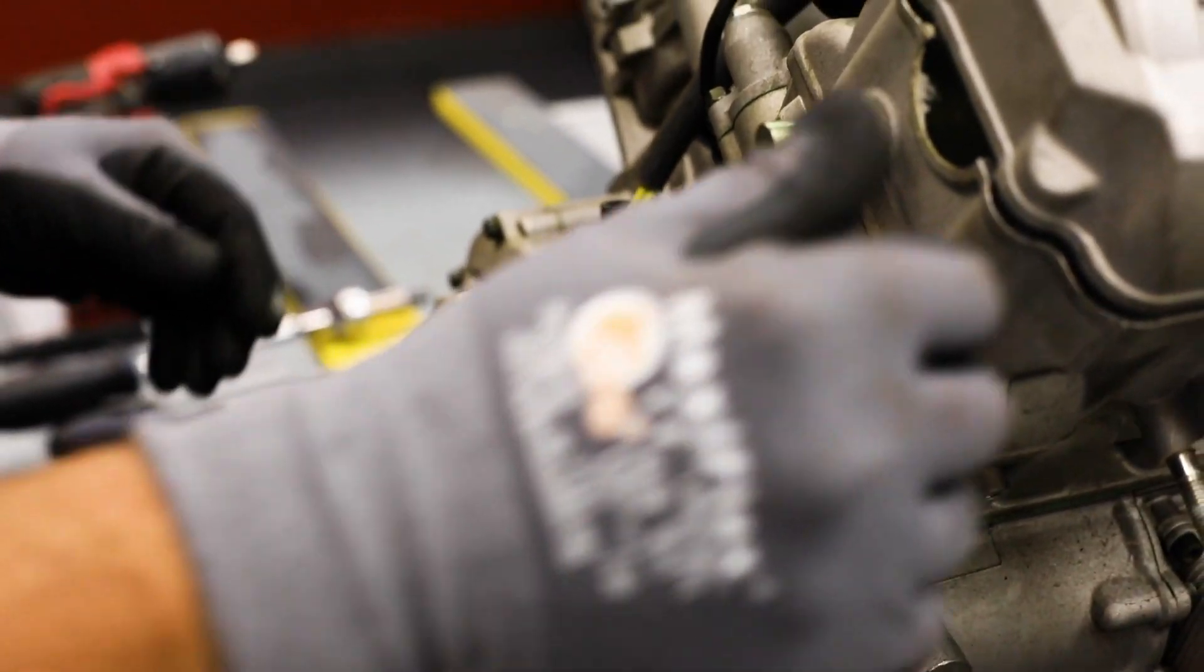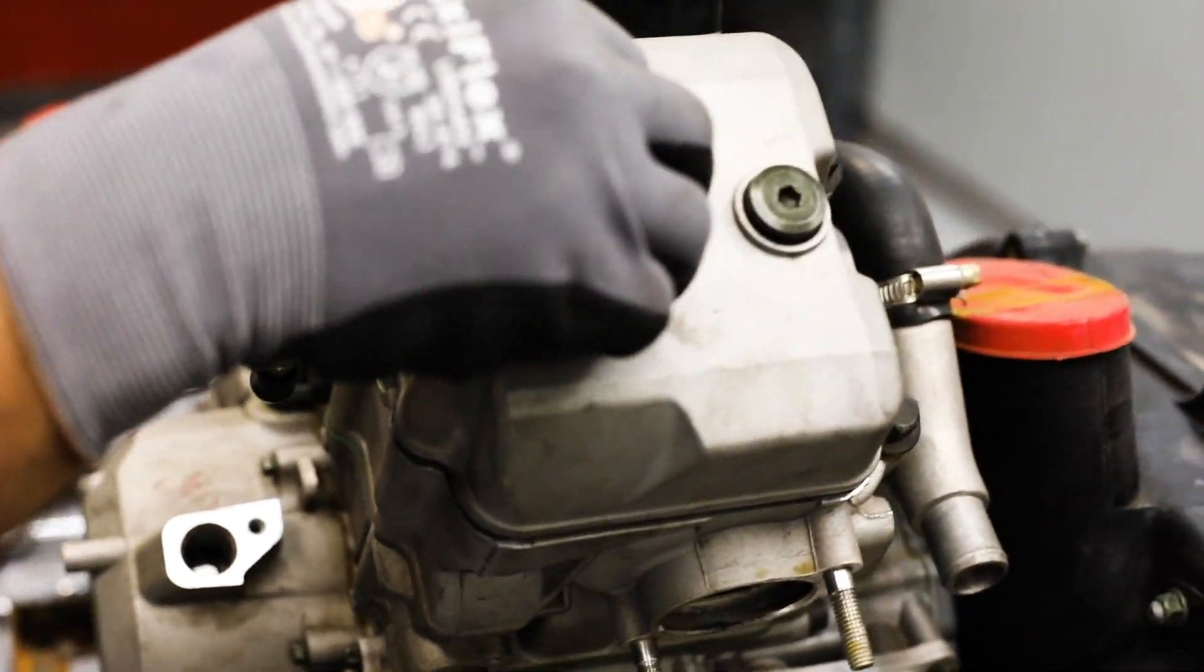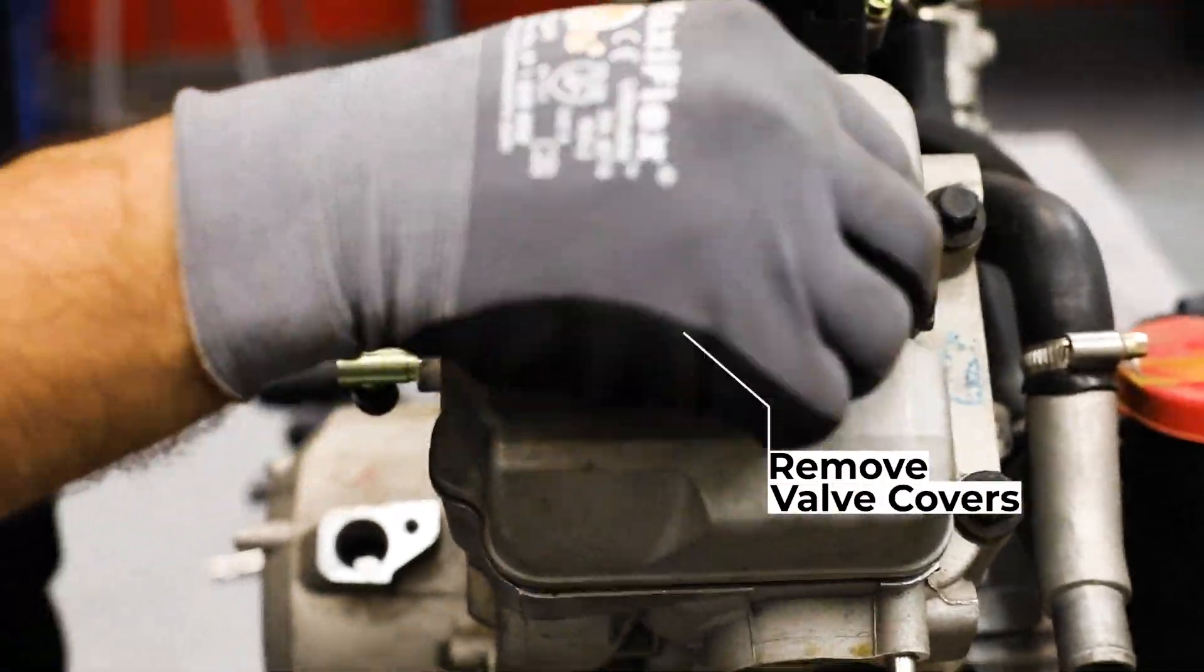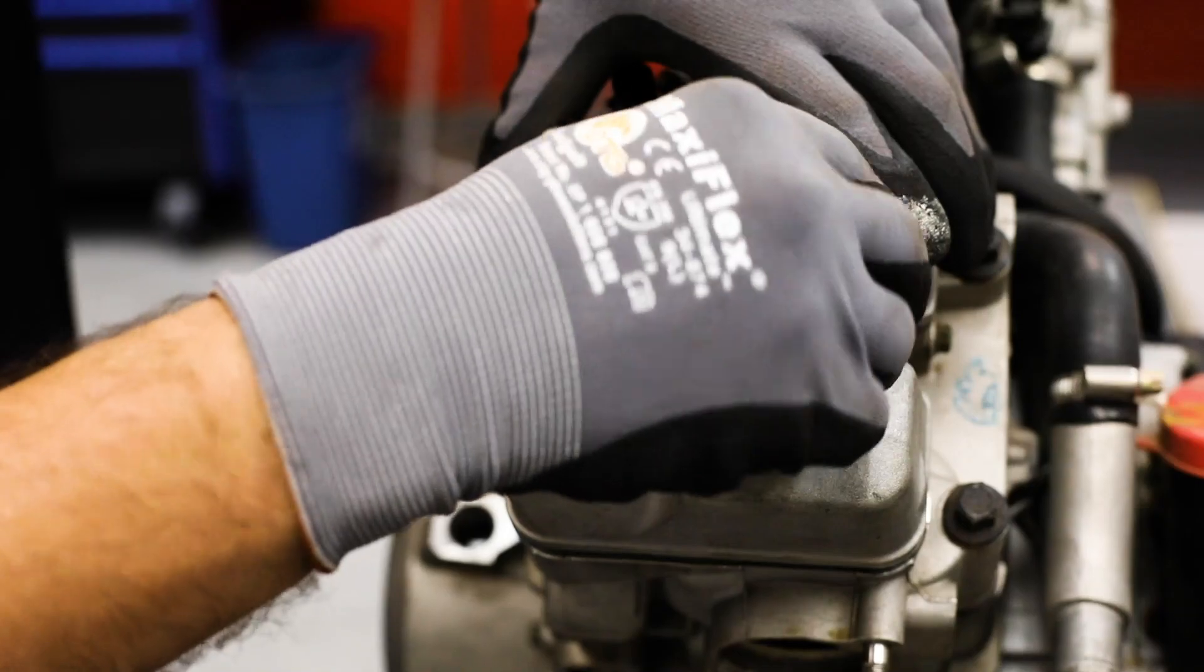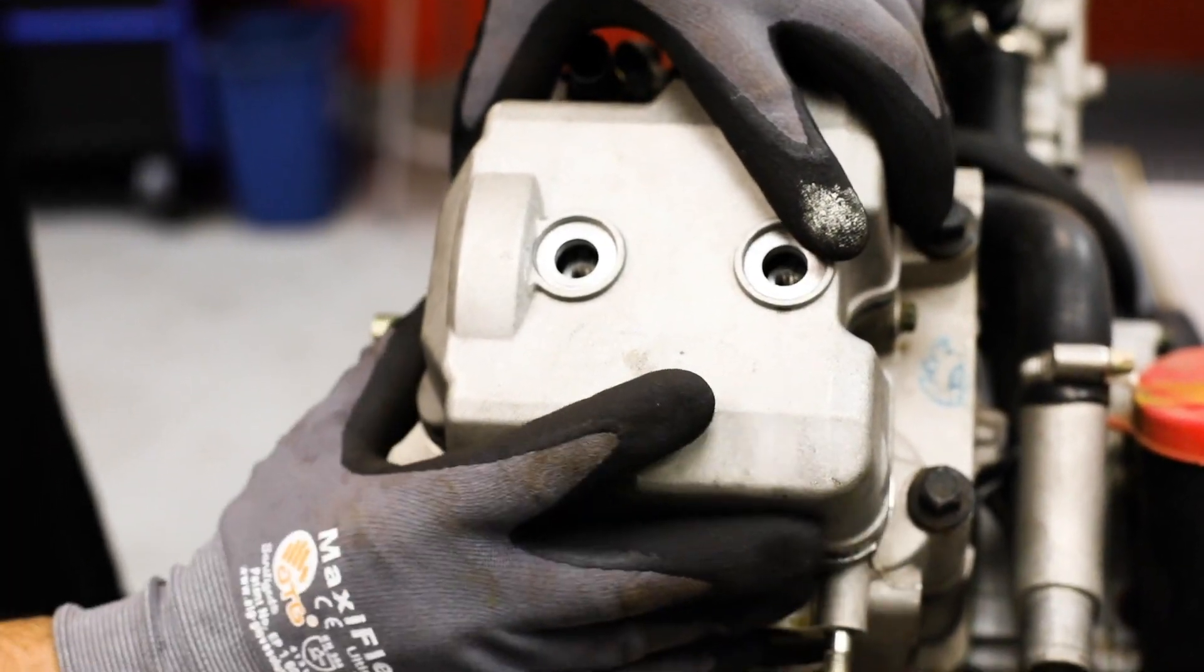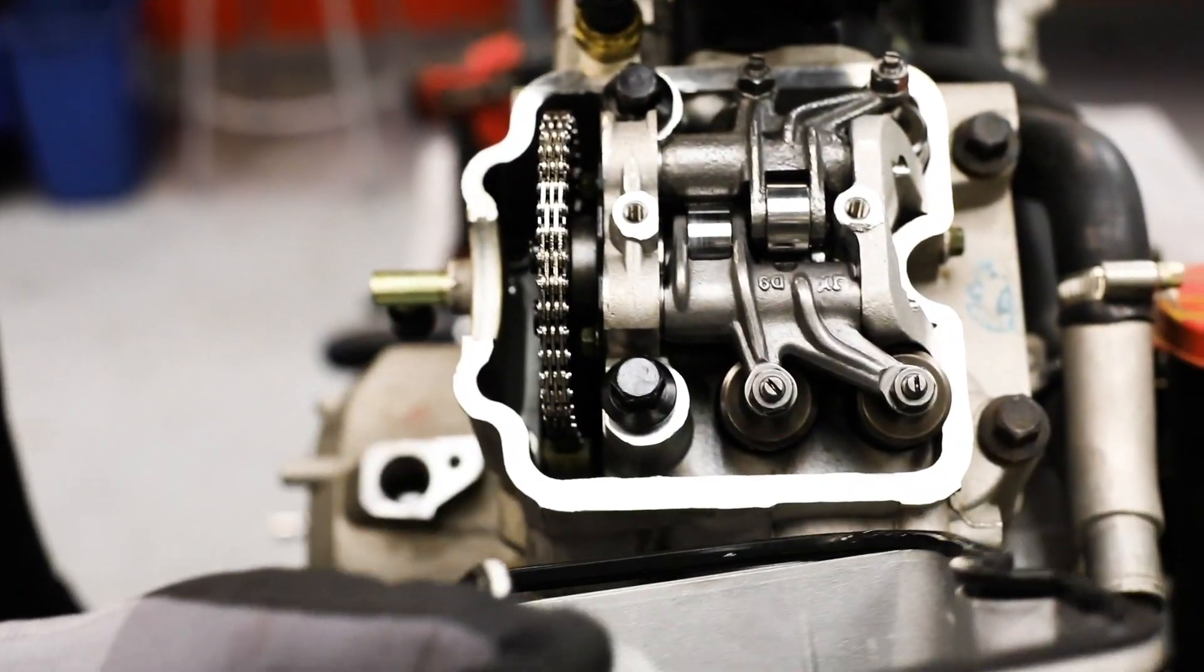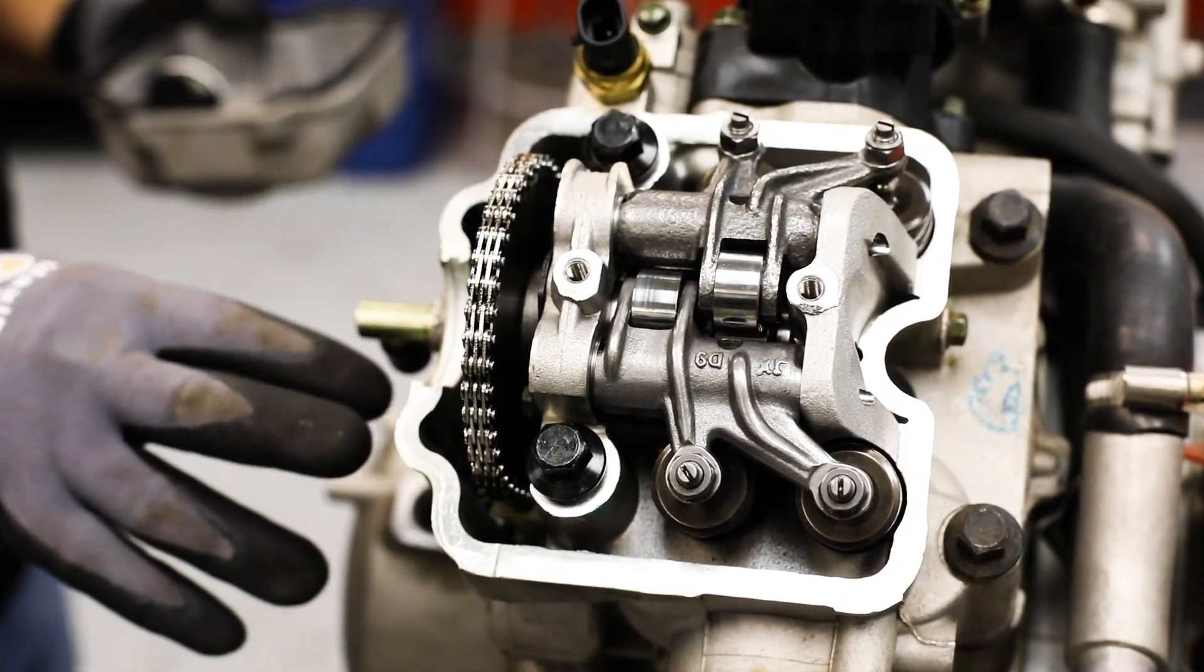Once you remove your cap, you will proceed to remove the valve covers. That way you can see your cam sprocket with your timing marks on it.